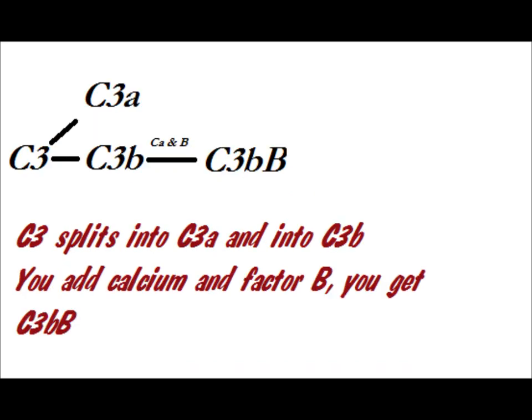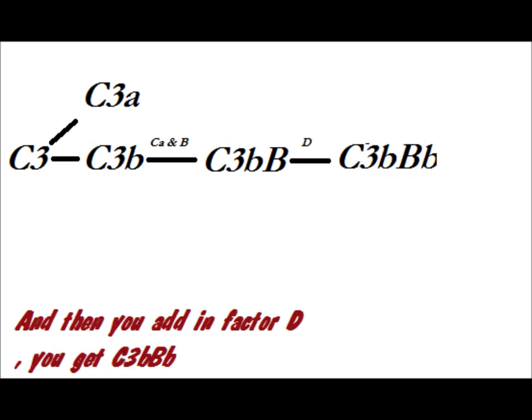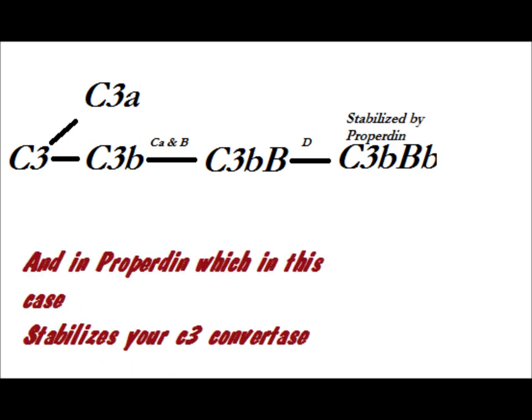The alternate pathway: C3 splits into C3a and C3b. You add calcium, add factor B, you get C3bB. Then you add in factor D, you get C3bBb.